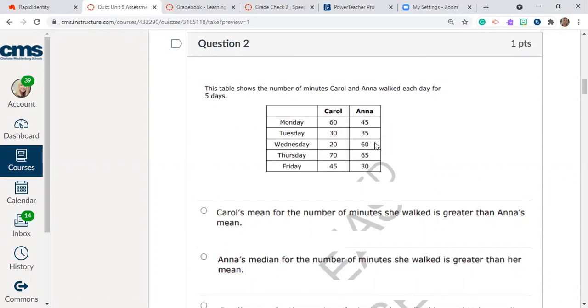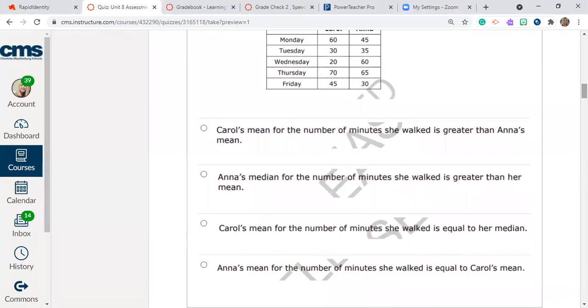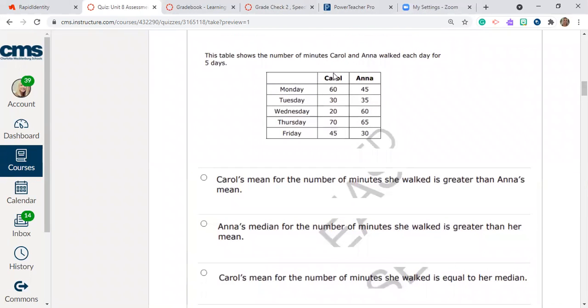Wednesday Carol walked 20 and Anna walked 60. Thursday Carol walked 70 minutes and Anna walked 65. Then finally on Friday Carol walked 45 and Anna walked 30. So you're going to want to look at what choices we have here. Carol's mean for the number of minutes that she walked is greater than Anna's mean. So keyword here is mean. We're going to want to try to find the mean of both sets of data. So right now I would find the mean of Carol's and I would find the mean of Anna's.